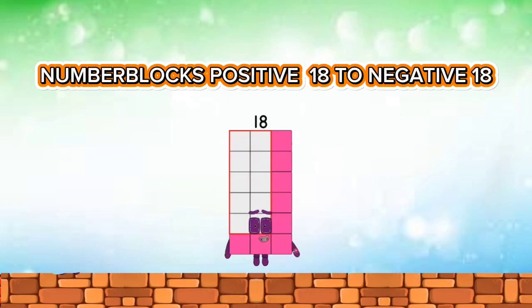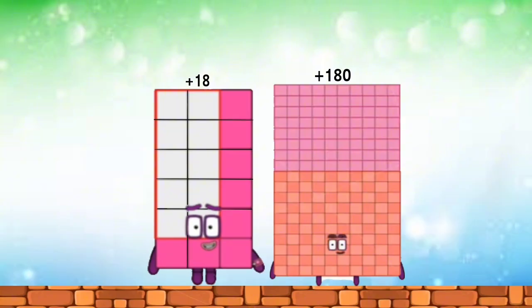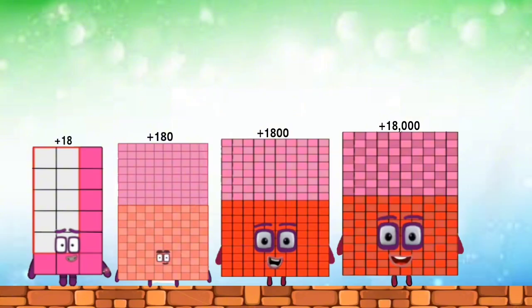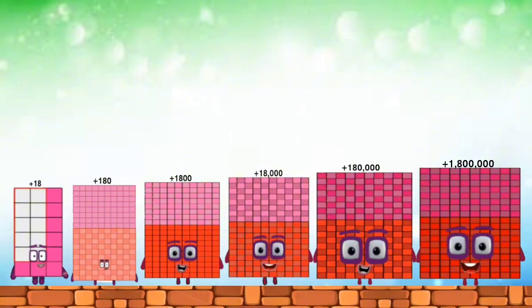Number blocks positive 18 to negative 18. Positive 18. Positive 180. Positive 1,800. Positive 18,000. Positive 180,000. Positive 1,800,000.